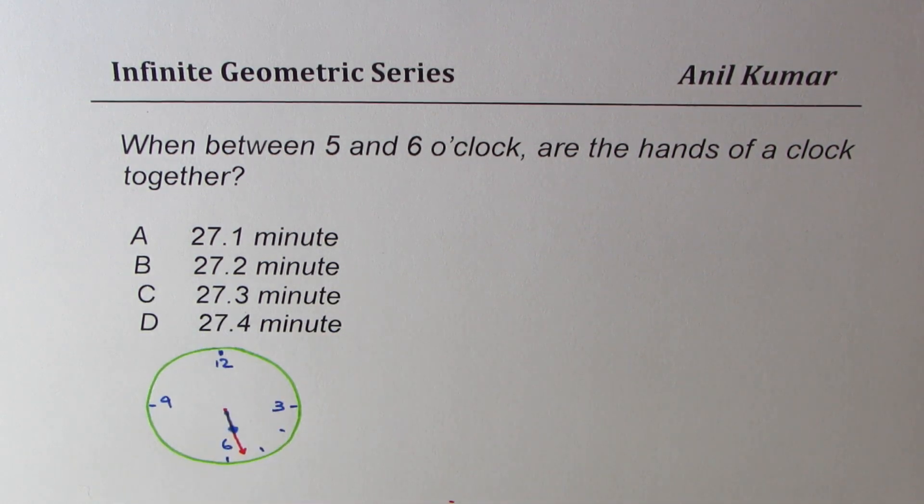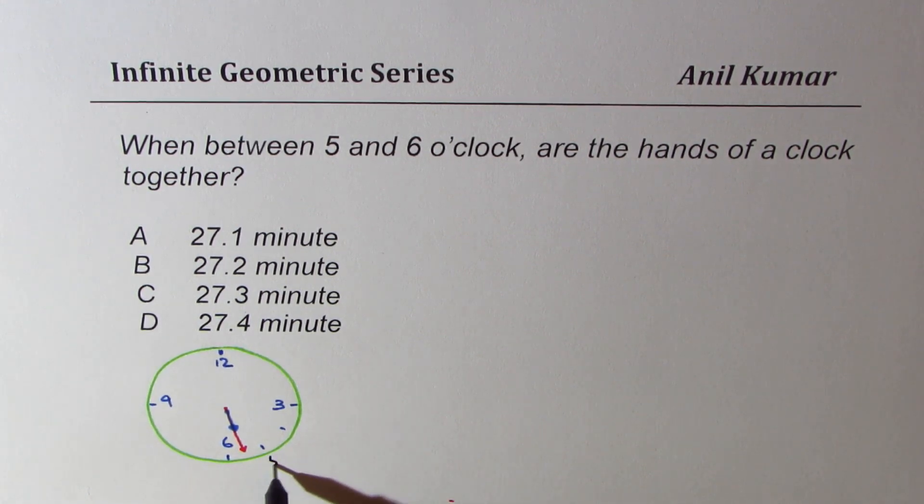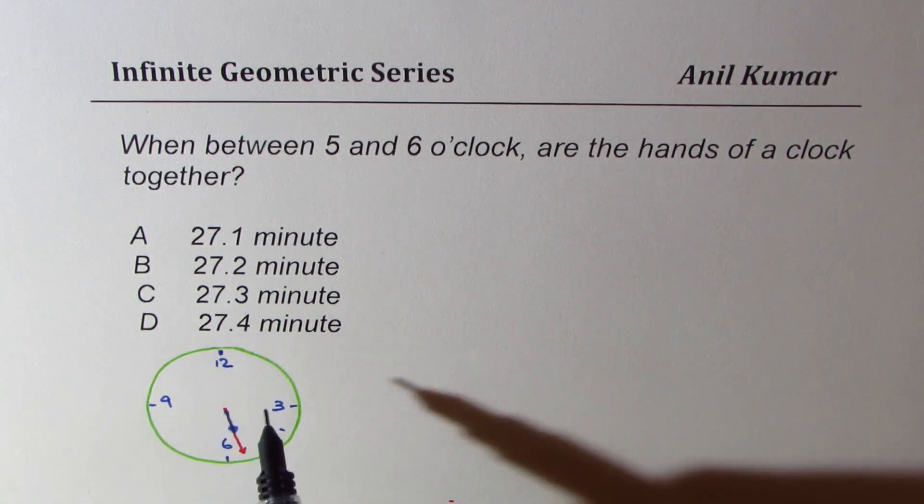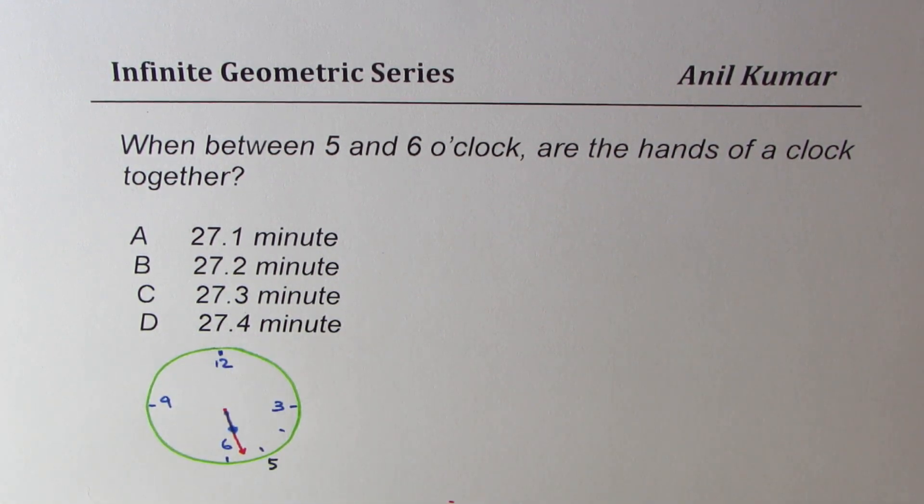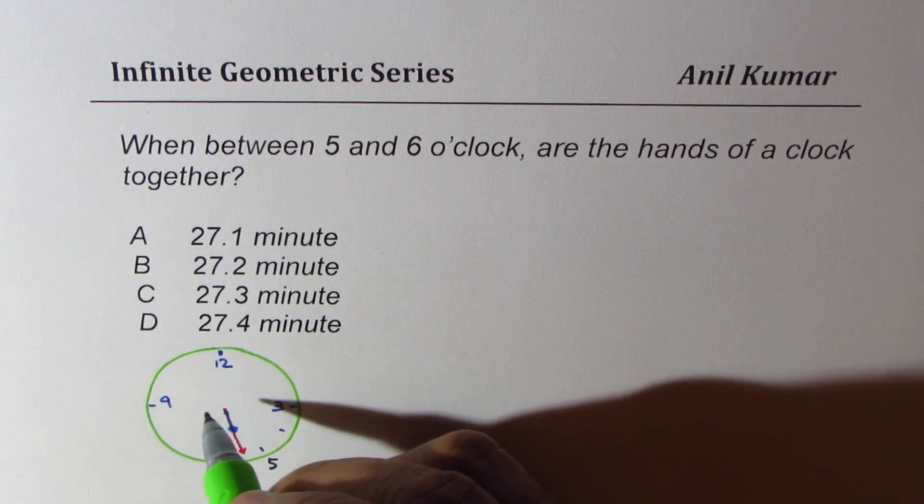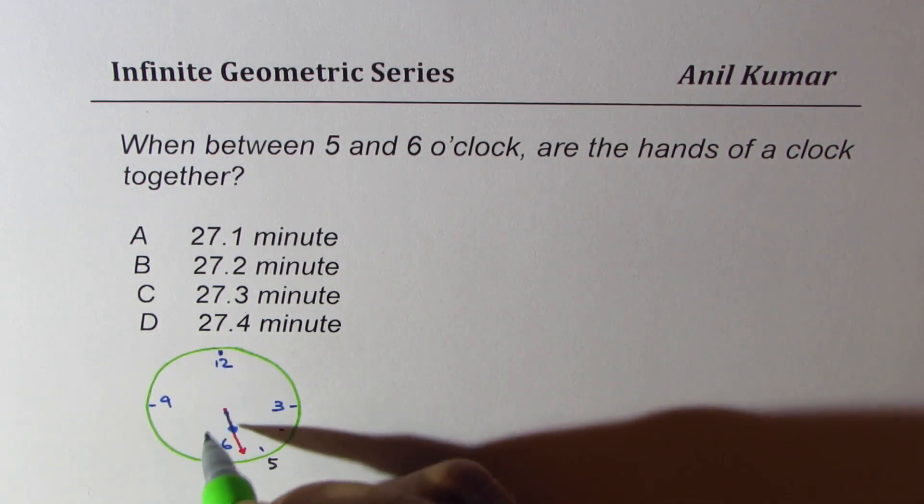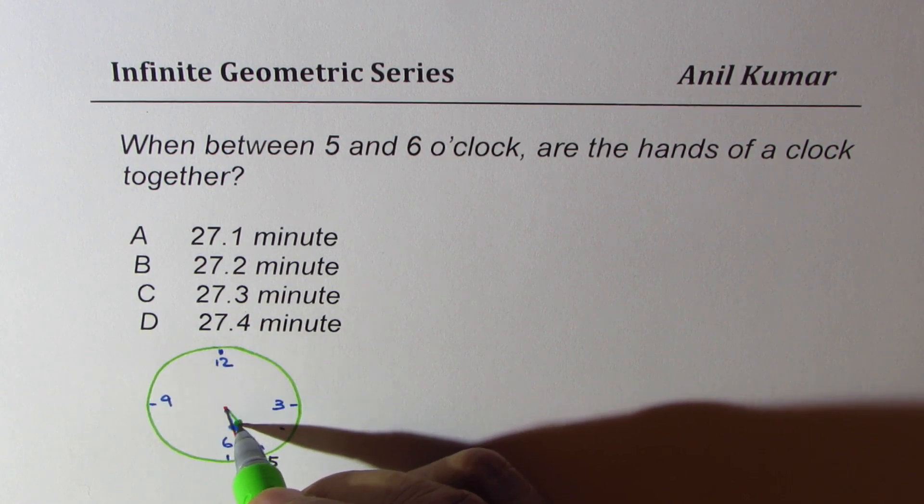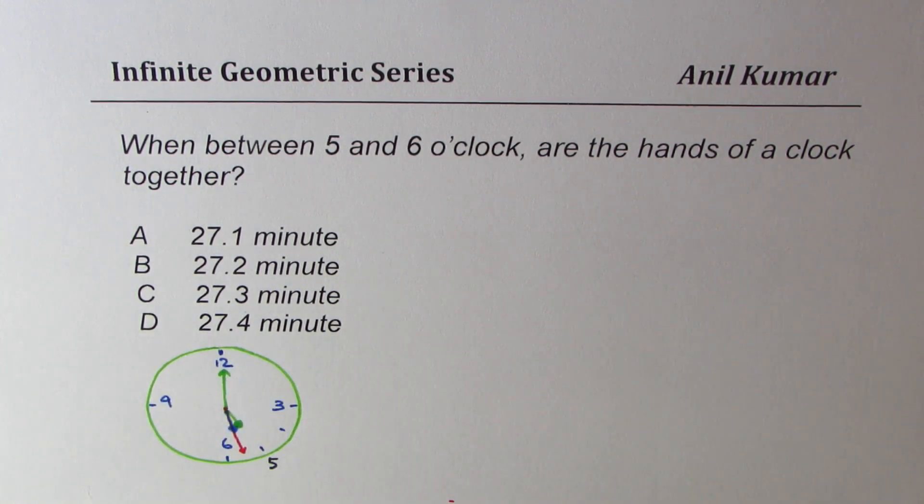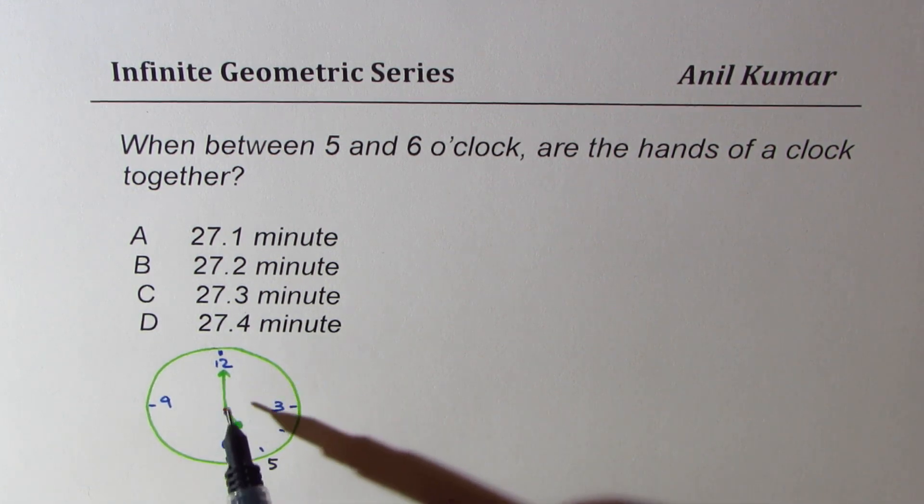So we want to figure out what should be the time. Now the concept to solve this type of question is that let's say at five o'clock, initially the position is kind of like this: the hour needle is at 5 and the minute needle is at 12.